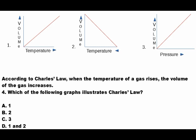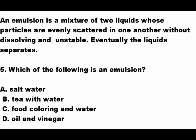The answer is letter A. In graph A, volume goes up as temperature goes up. In graph 2, volume goes up but temperature goes down. In graph 3, temperature up means pressure up. So the answer for number four is letter A. Let's go to number five, the last question.